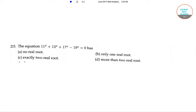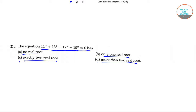The next question is: the equation 11 to the power x plus 13 to the power x plus 17 to the power x minus 19 to the power x equals 0 has — option A: no real root, option B: only one real root, option C: exactly two real roots, and option D: more than two real roots.